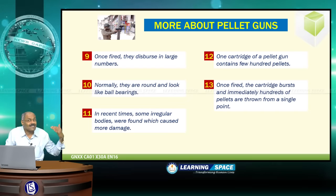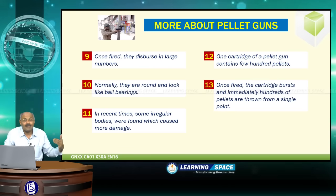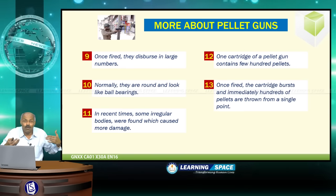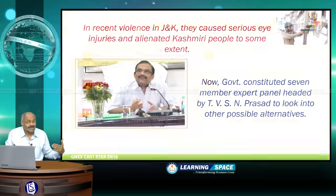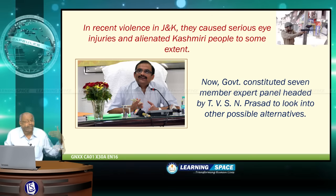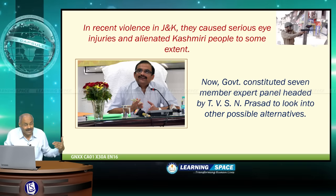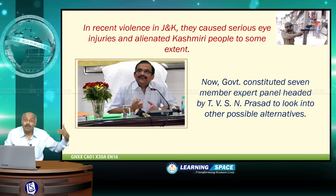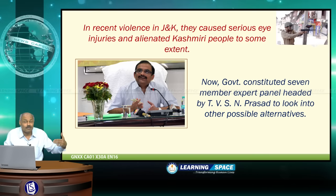The recent problems arise from three reasons: pellet guns were used by untrained people, they were used very close to human beings, and they targeted faces rather than the body — basically the legs. The government is now looking for alternatives to pellet guns as a crowd control mechanism. The incidents, especially the loss of sight of several people in Jammu and Kashmir, have alienated Kashmiri people to some extent. Accordingly, a seven-member expert panel headed by TVSN Prasad was formulated to look into possible alternatives.